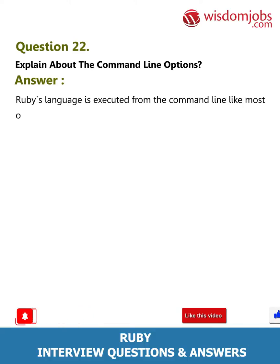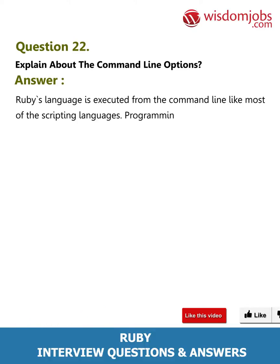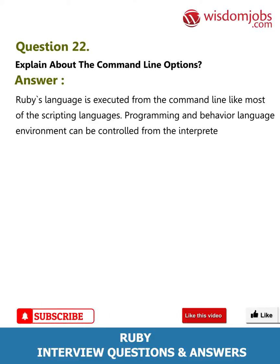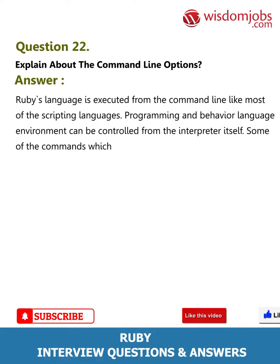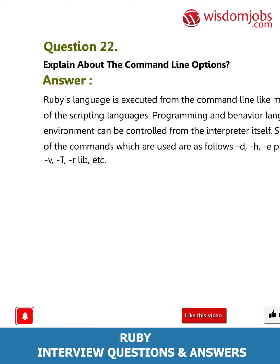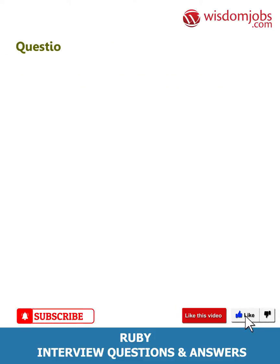Question 22: Explain about the command line options. Answer: Ruby language is executed from the command line like most scripting languages. The programming behavior and language environment can be controlled from the interpreter itself. Some of the commands which are used are as follows: -d, -h, -e, prog, -v, -t, -r, lib, etc.